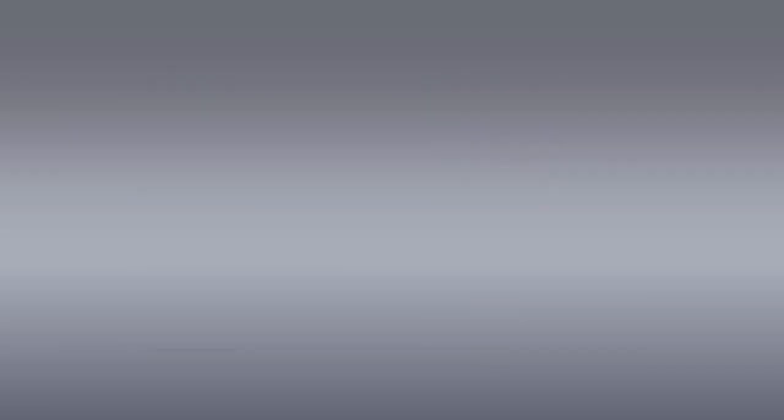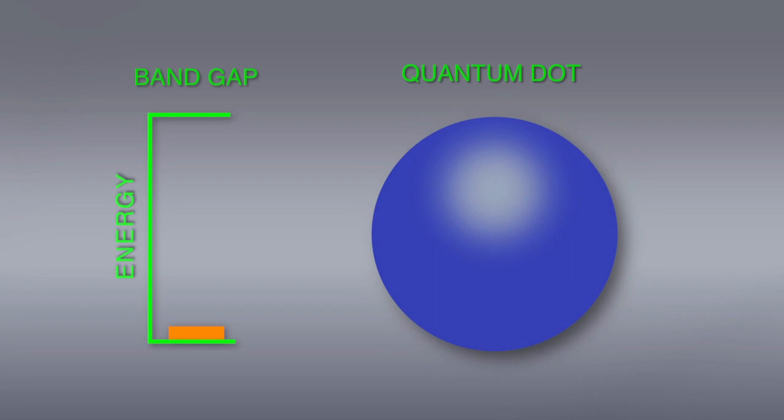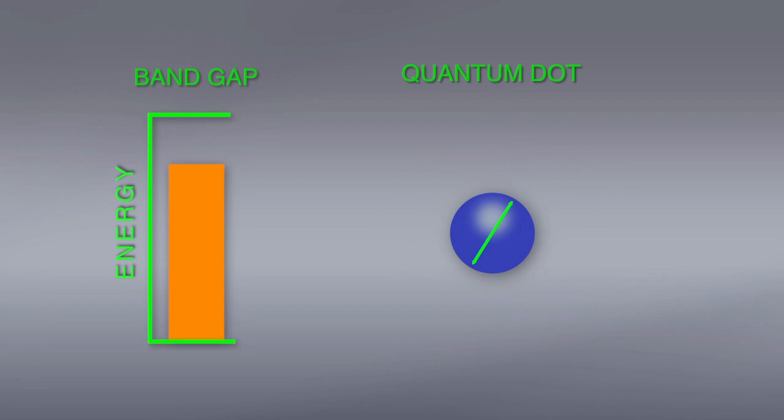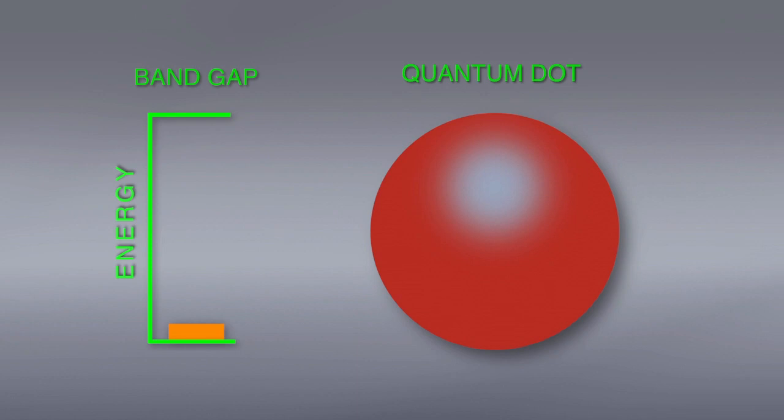The band gap is basically directly related to the diameter. The smaller the particle, the higher the energy of the band gap. Small semiconductor particles absorb light in the blue, intermediate sized particles absorb light in the green, and larger ones in the red. This quantum mechanical effect shifts the threshold all the way across the visible spectrum from red to green to blue to the ultraviolet.